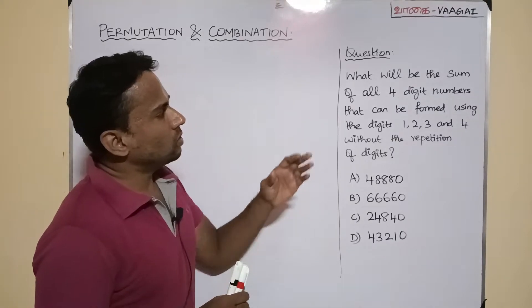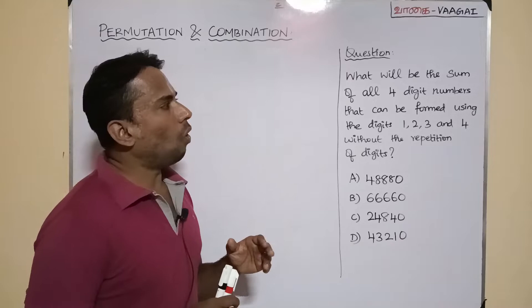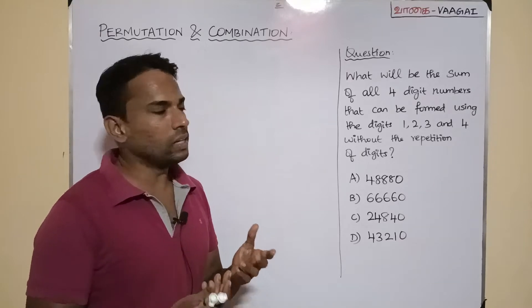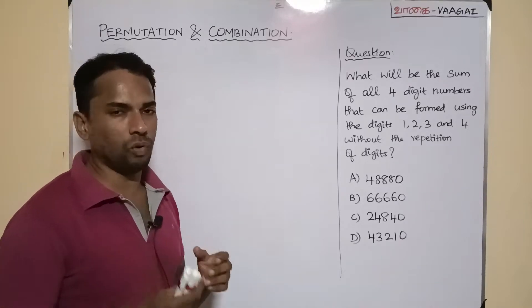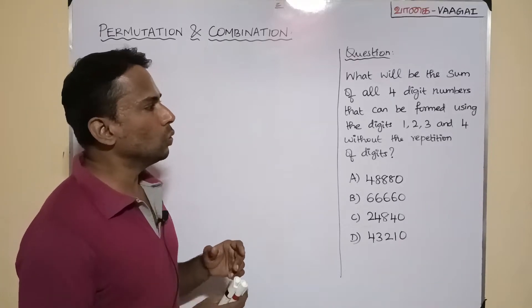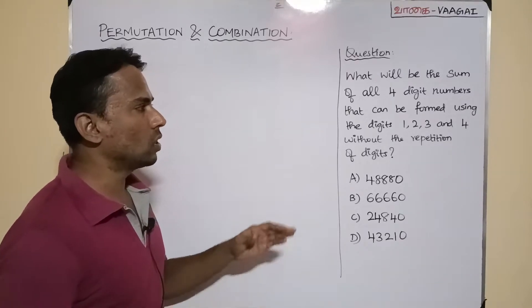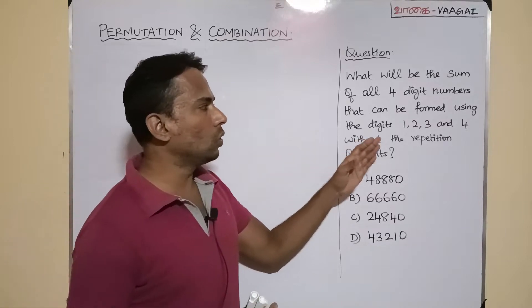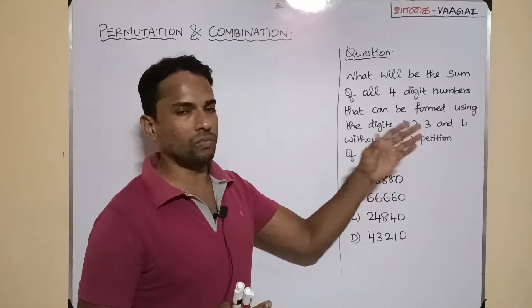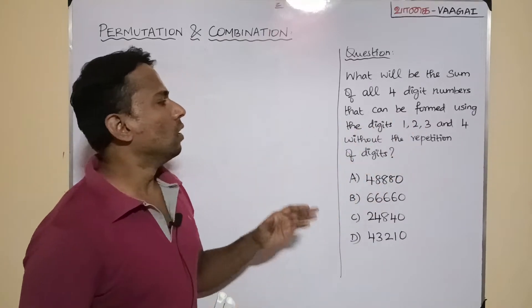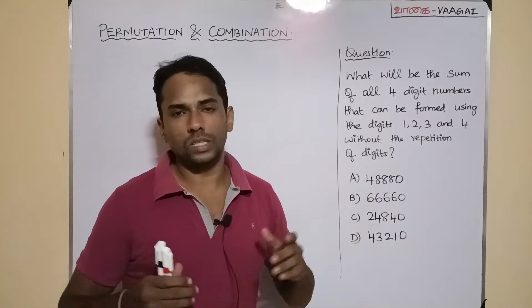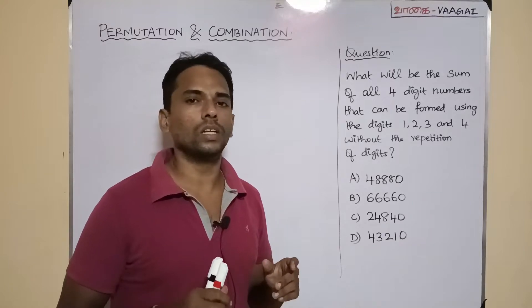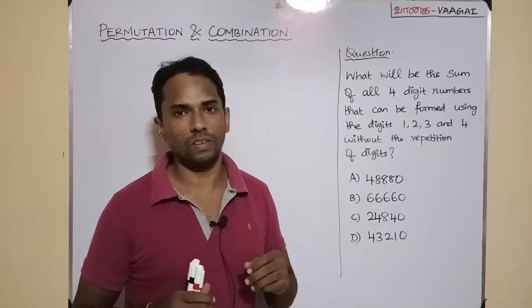What will be the sum of all four-digit numbers that can be formed using the digits 1, 2, 3 and 4 without the repetition of digits? Such an interesting question we have here.